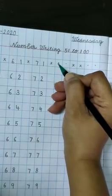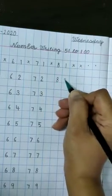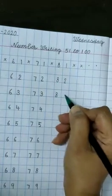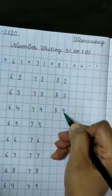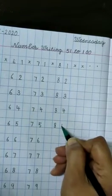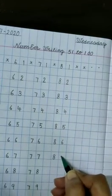After 80, write 81. Then 82, 83, 84, 85, 86, 87.